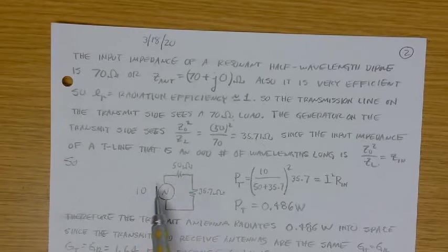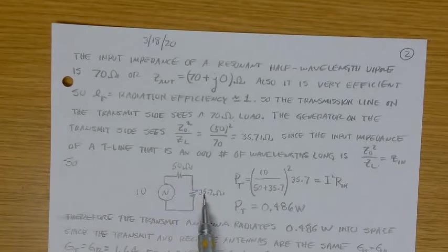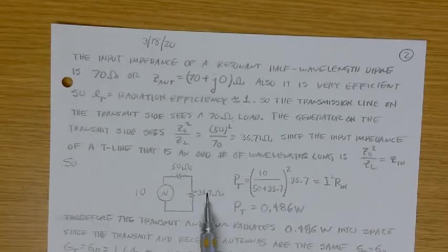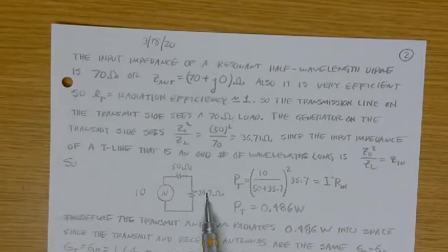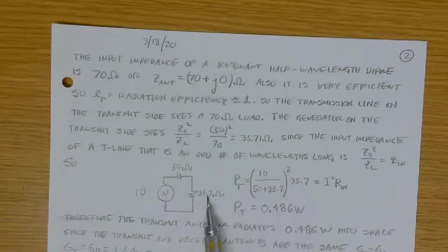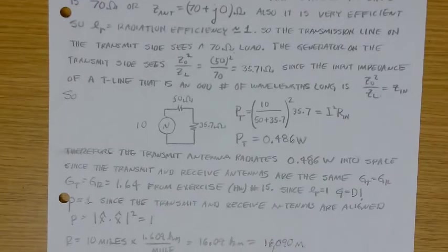So if the two are the same, that just means the radiation efficiency is one, or there are no, we're assuming that there are no ohmic losses. Surely there are, in this case, some ohmic losses, but they're so small compared to the radiation, the amount of power radiated, that we can just assume that radiation efficiency is, for all intents and purposes, unity. Okay, so transmission line on the transmit side sees a 70 ohm load, just as we said. So the generator on the transmit side, because it's an odd number of quarter wavelengths long, it's going to see Z naught squared over Z load, or 50 squared over 70, or about 36 ohms.